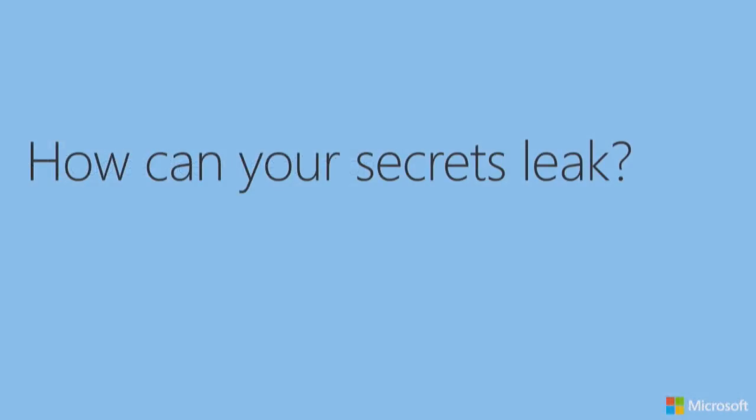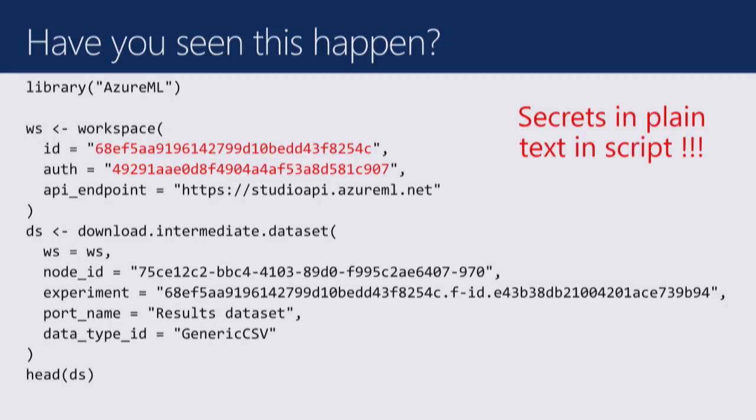And how could your secrets leak? I'm sure you've seen this type of example. What's wrong here? You have your ID and authentication code in clear text directly in your script. And if it's in your script, it's going to be in your history, and it's going to be in your script file. One day you're going to upload that to GitHub, and somebody else will find that and log into your service.